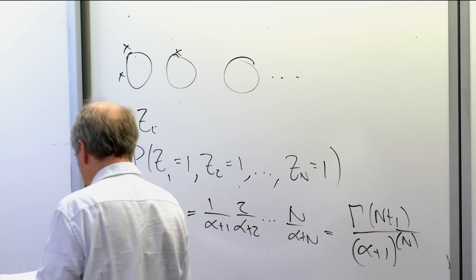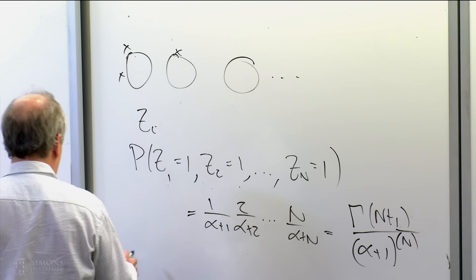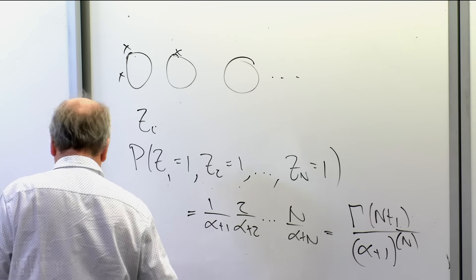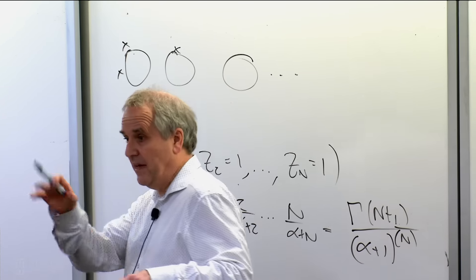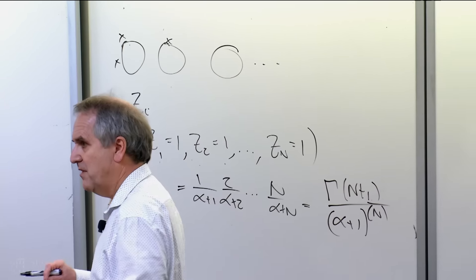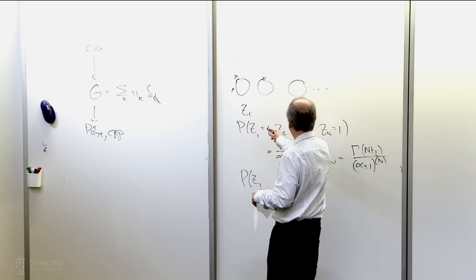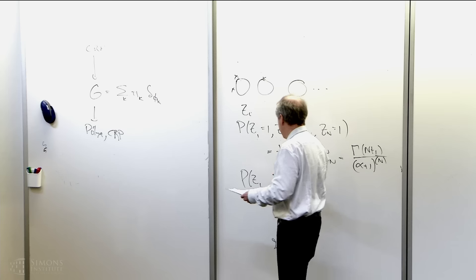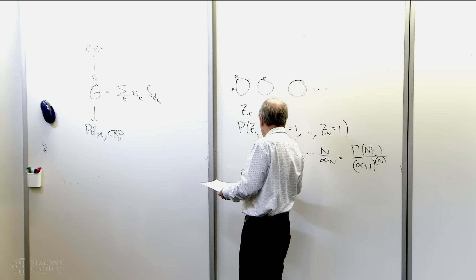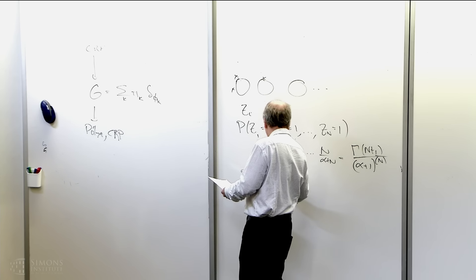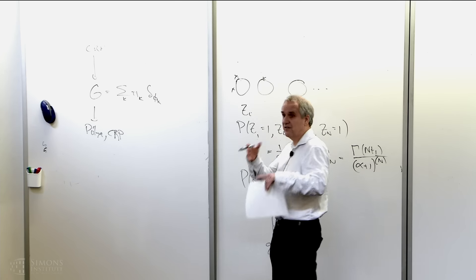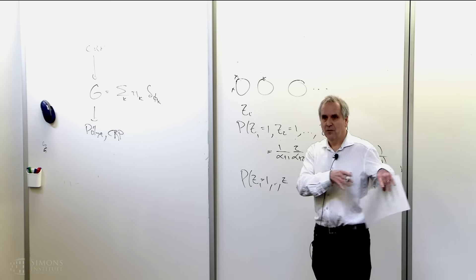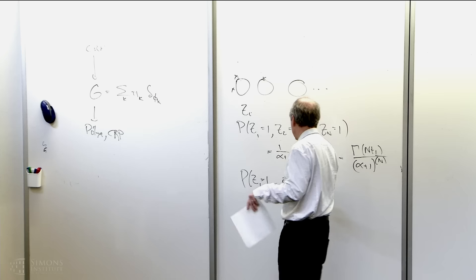Now let's return to de Finetti. De Finetti says: for any exchangeable sequence, I get this integral expression. Let's take the exchangeable sequence of these indicators — it's a Pólya urn, so they're certainly exchangeable. And so by de Finetti, the probability that the exchangeable sequence takes on particular values — I wrote that earlier as θ_n(a) — and that'll be z equal to a_1 or a_0, those are the only possibilities in the Bernoulli case.